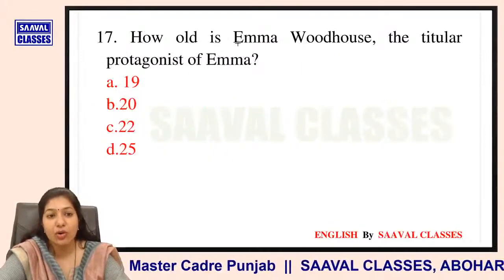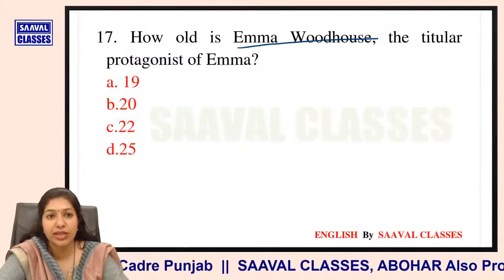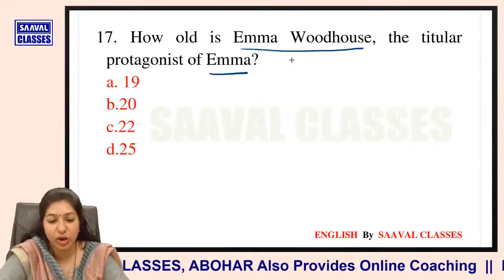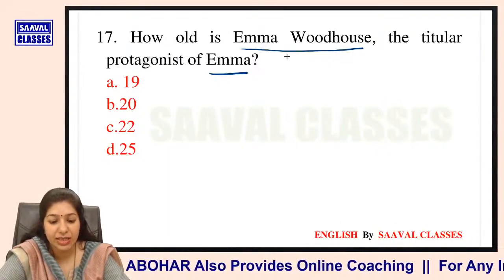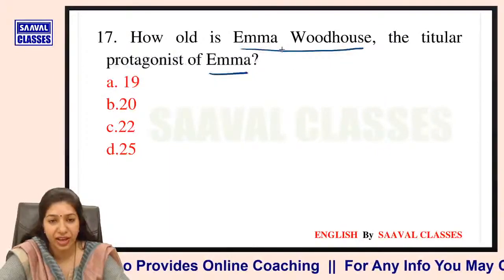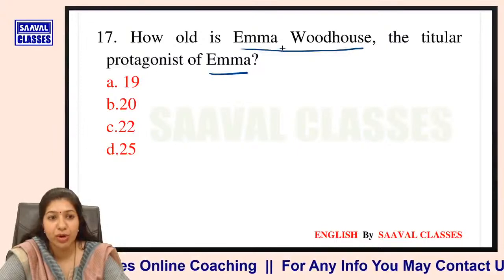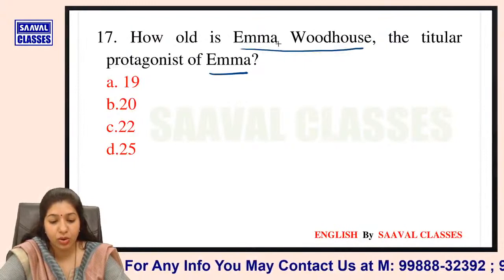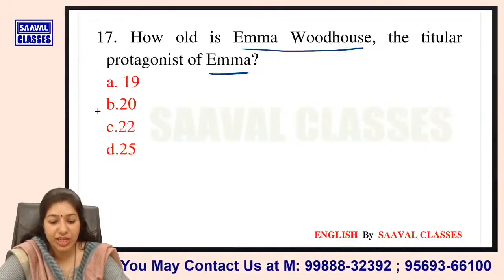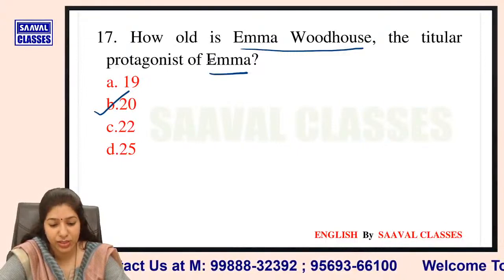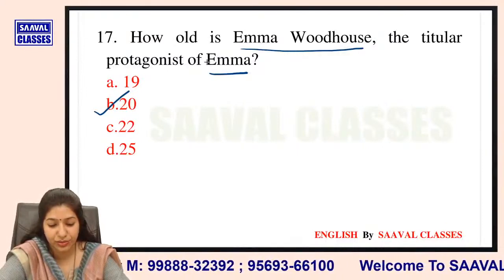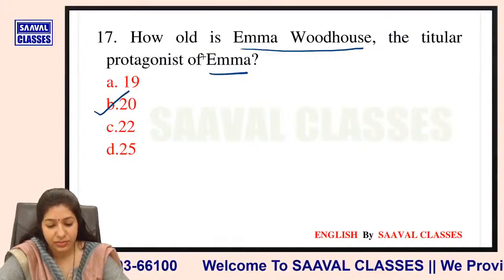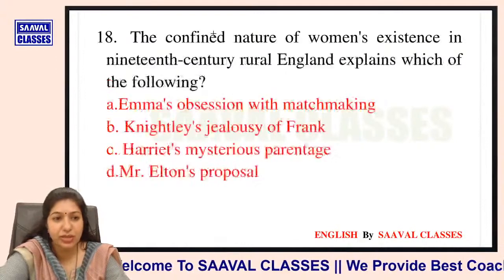Question number 17: How old is Emma Woodhouse, the titular protagonist of Emma? Options are 19, 20, 22, ya 25? She is 20 years old. 19 kyun keh rahe hain sab? She is 20 years old.